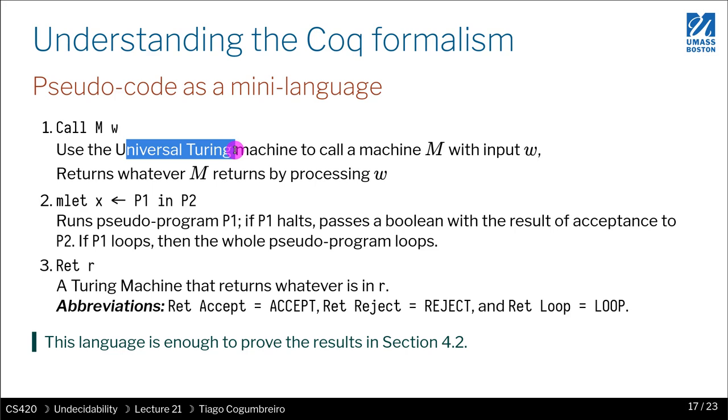If you interpret a Turing machine M as a function, that is to say you're calling that function and you're passing an argument to that function, so you're applying M to W. And the way you can do that is exactly with the universal Turing machine. So whenever you see call M with W, what you're doing is you're running this Turing machine and passing it this input. The result of the whole thing could loop, accept, or reject.